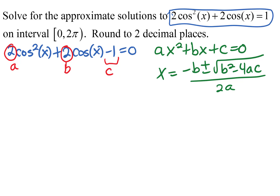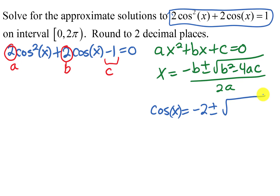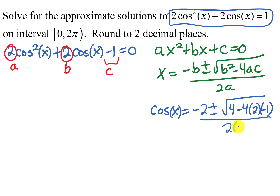Putting those into the quadratic formula won't give us x — it will give us cosine x. So cosine x equals negative b, which is negative 2, plus or minus the square root of b squared (that's 4) minus 4 times a (which is 2) times c (which is negative 1), all over 2a, which is 4.